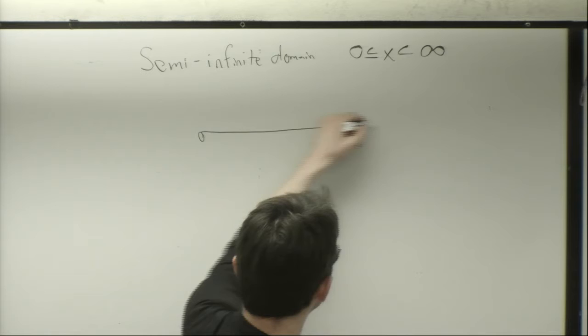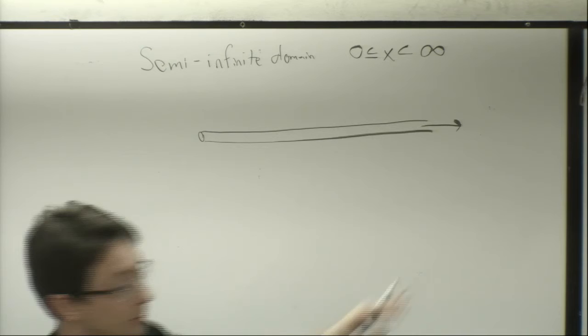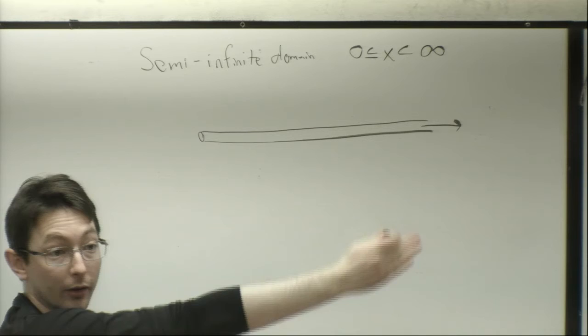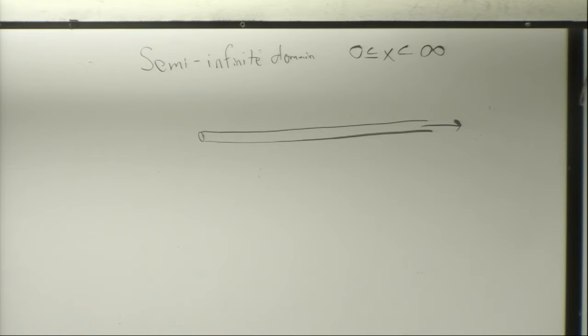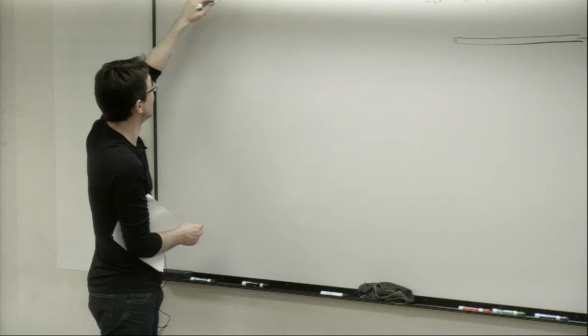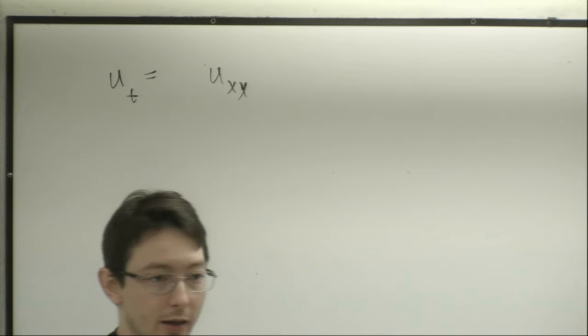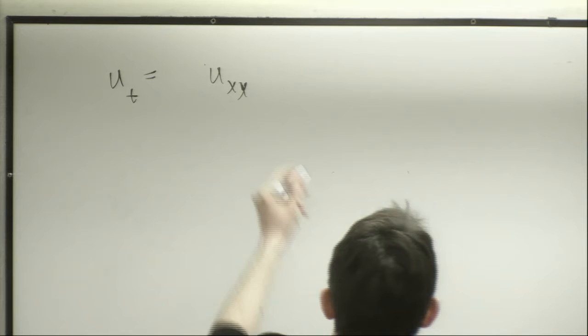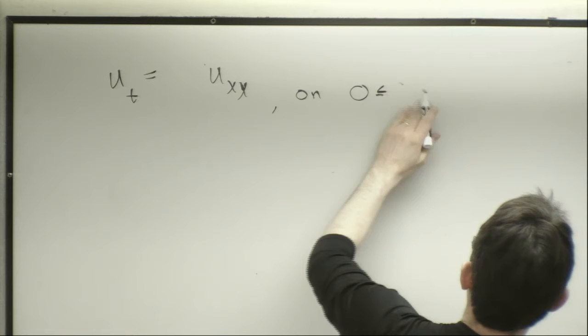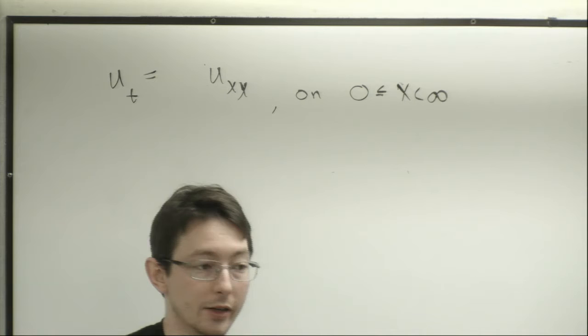The first example we're going to do is an infinitely long thin steel rod with some temperature distribution, except it's going to be half-infinite — it starts at 0 and goes to positive infinity. The equation for heat in a rod is u_t equals u_xx, and we'll set the heat constant equal to 1 to keep things clean. So we have this on x from 0 to infinity.